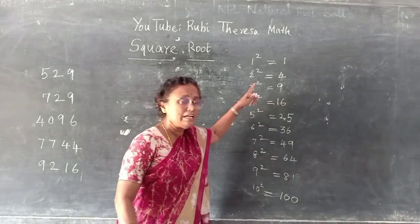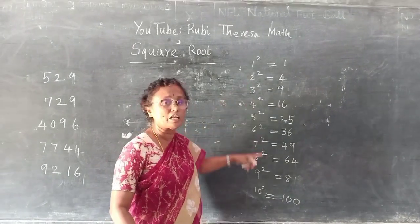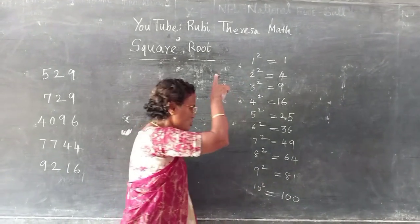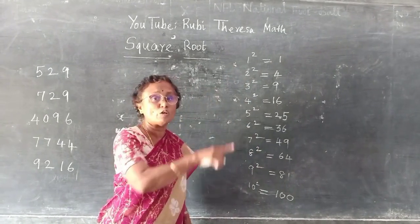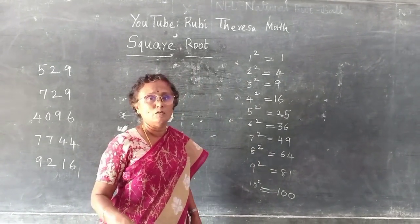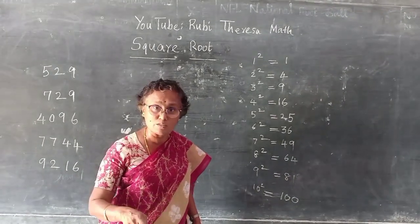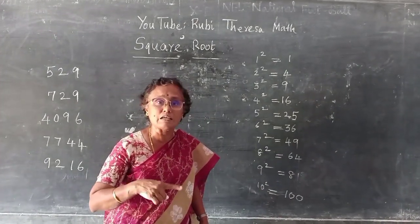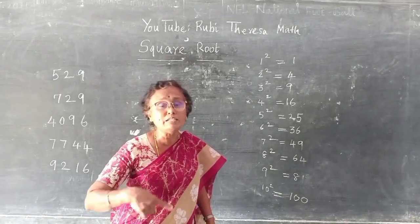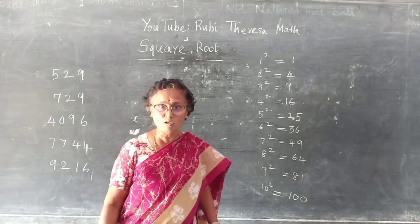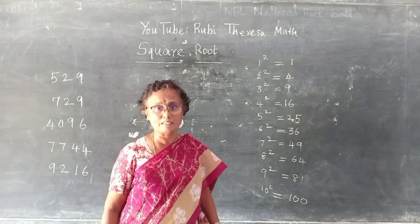Is there any difficulty in this? No. You will be very thorough. Those who do not know also, just you have to memorize it. 1 square is 1, 2 square is 4, 3 square is 9, 4 square is 16, 5 square is 25, 6 square is 36, 7 square is 49, 8 square is 64, 9 square is 81, 10 square is 100. You should be able to say the answer.